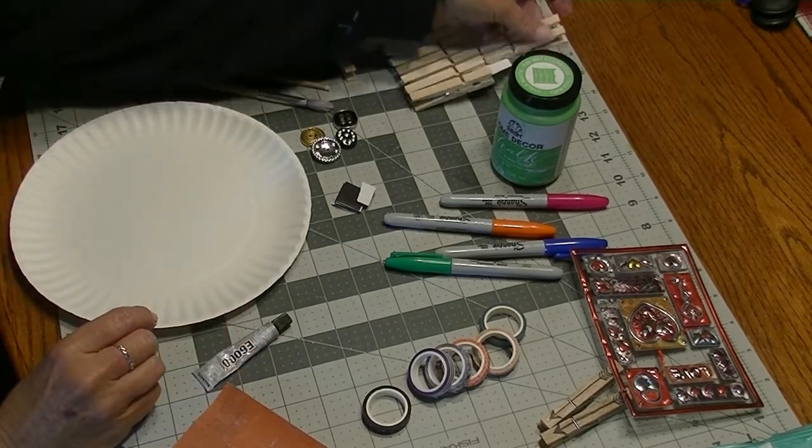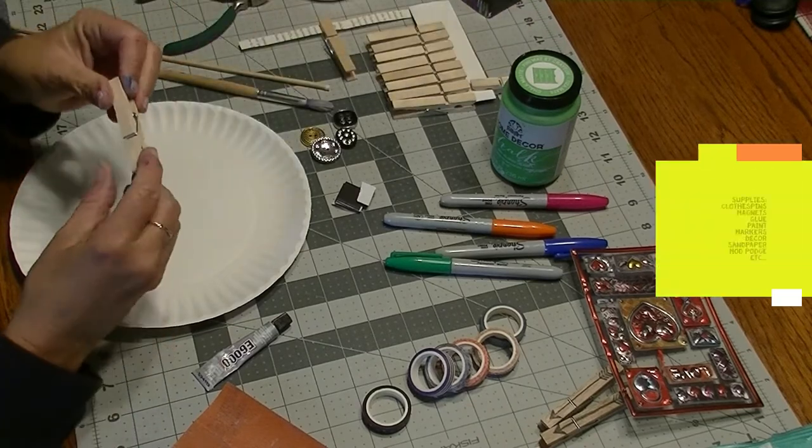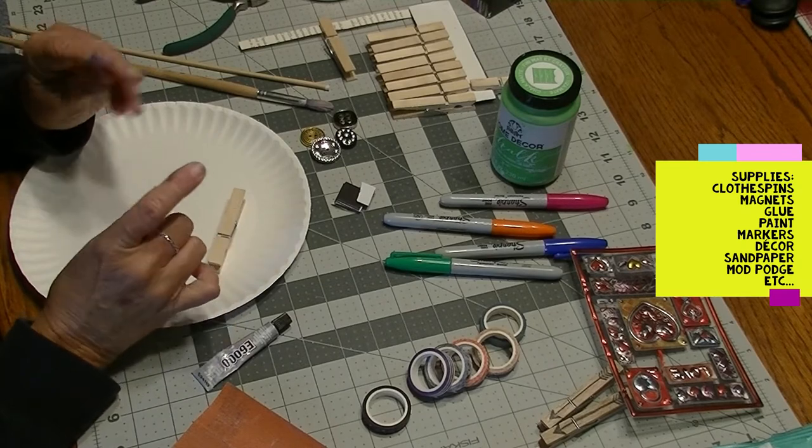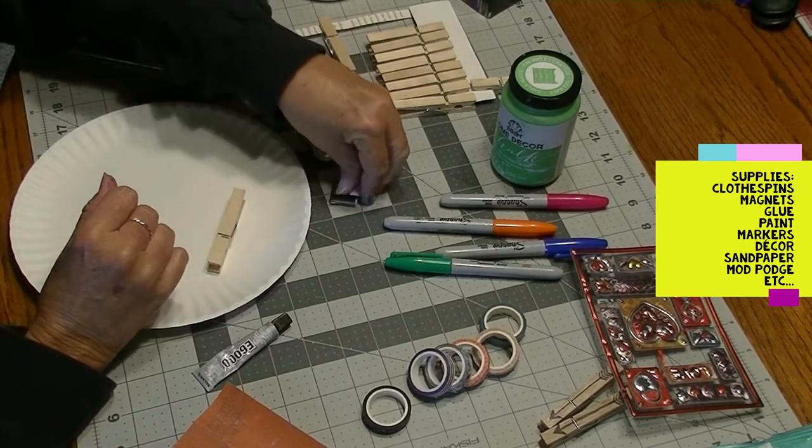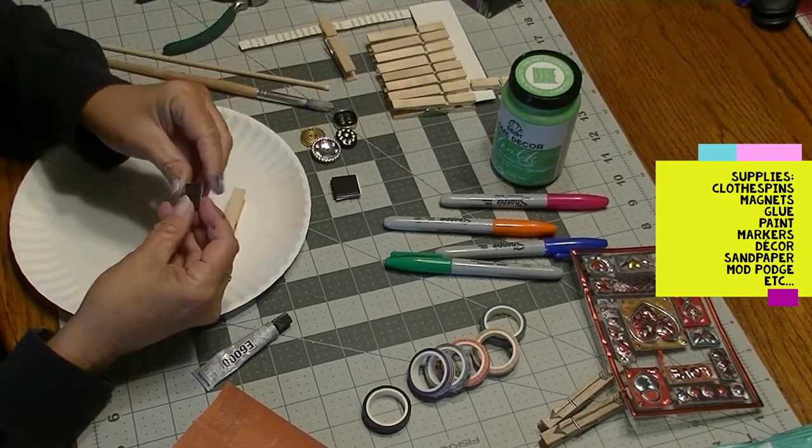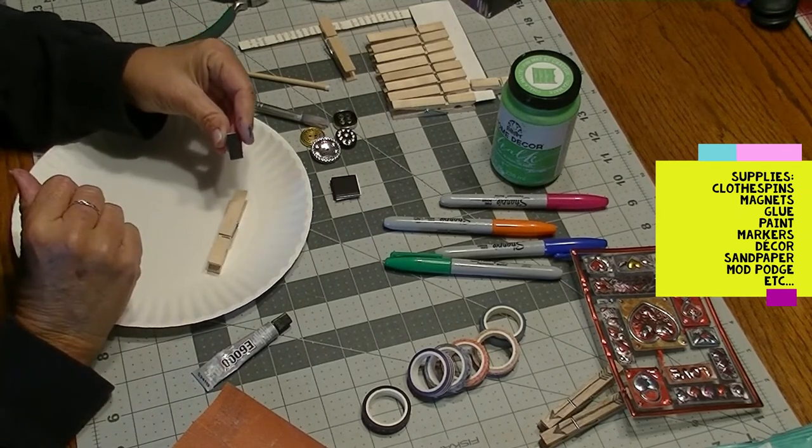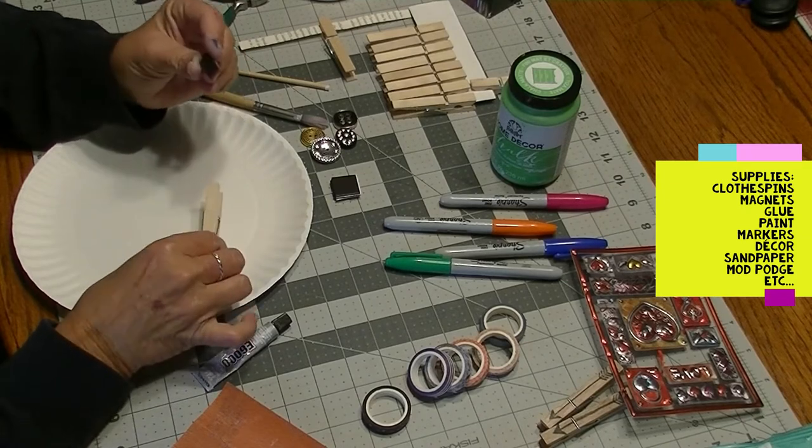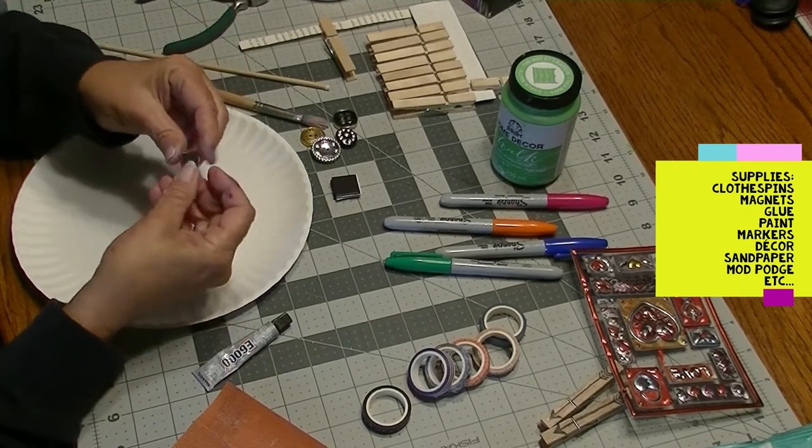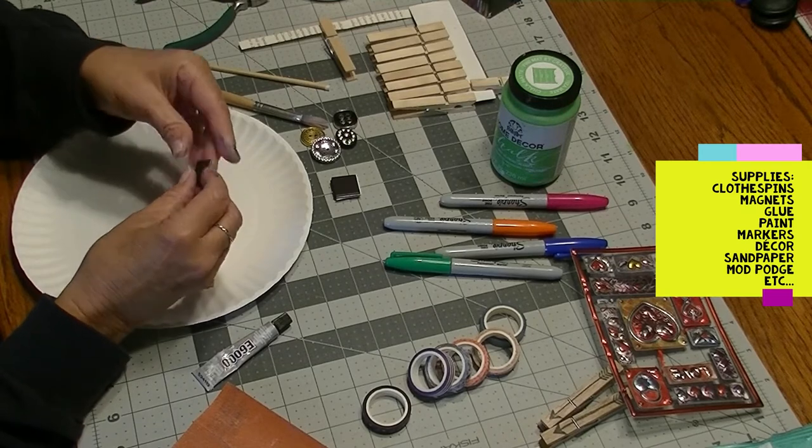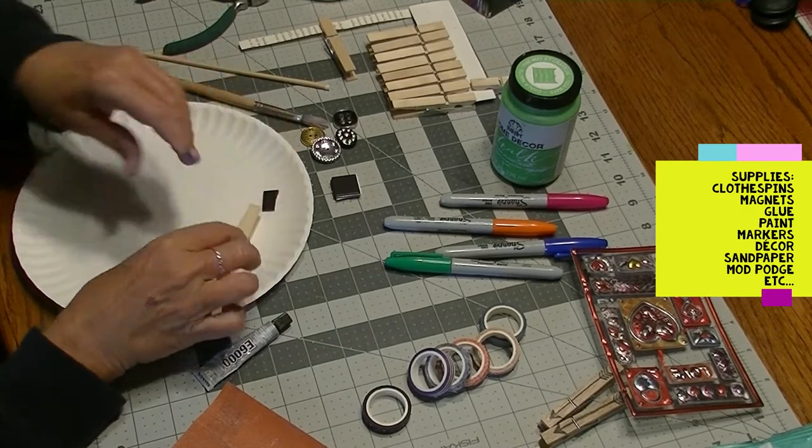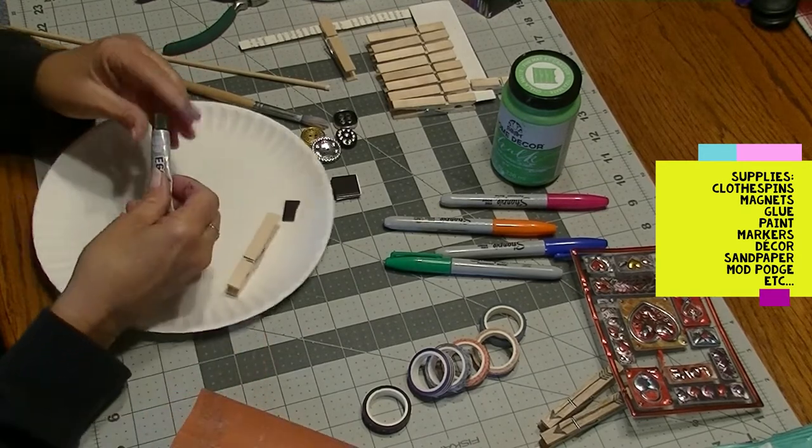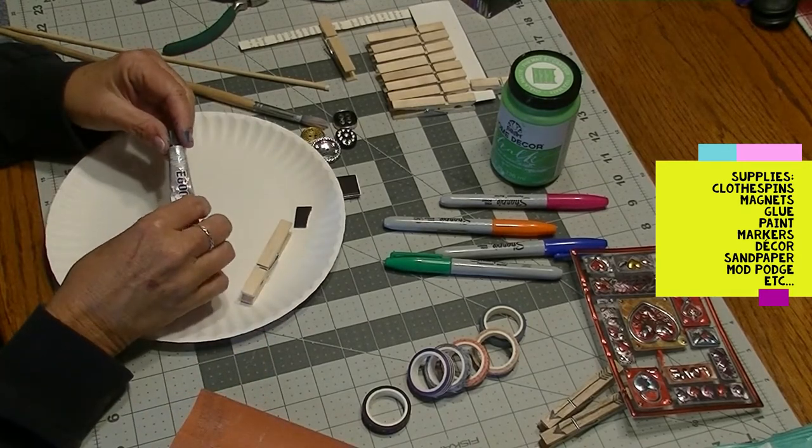The first thing I need are wooden clothespins, which are very inexpensive. Other essentials include the magnetic strip that goes on the back. There is a kit available that contains clothespins as well as the magnetic stickers. You'll also need E6000, specifically if you're going to add any embellishments.